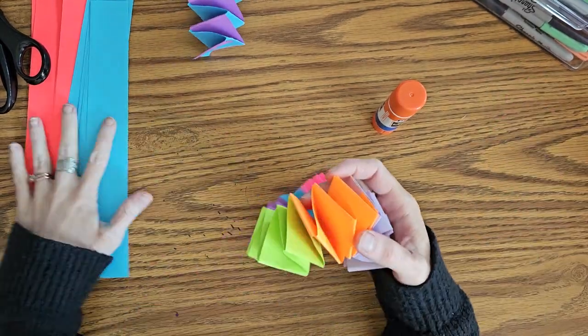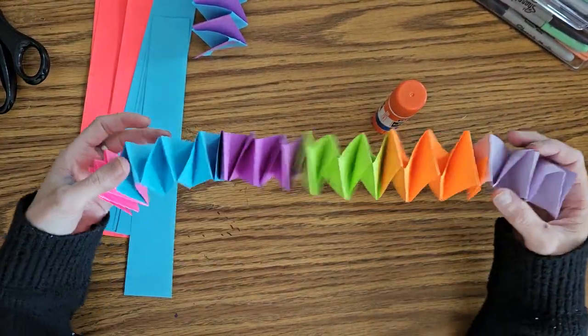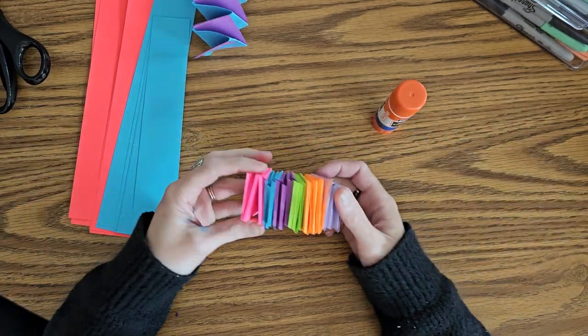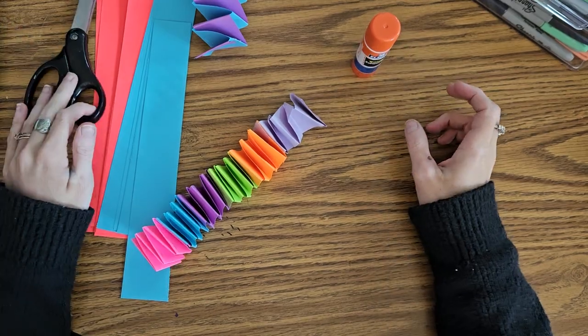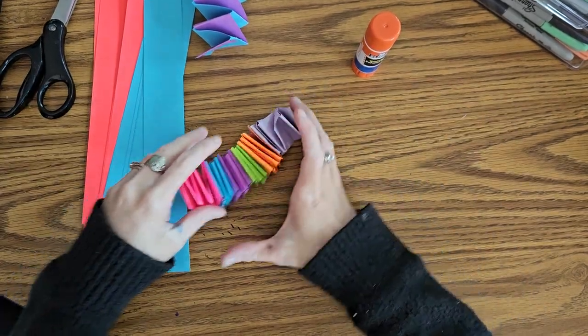All you need is some strips of paper. I like to use different colors. That way they're easier to keep track of the pattern. And then you're also going to need a glue stick and possibly some scissors at the end.